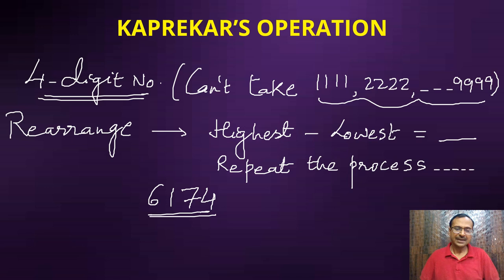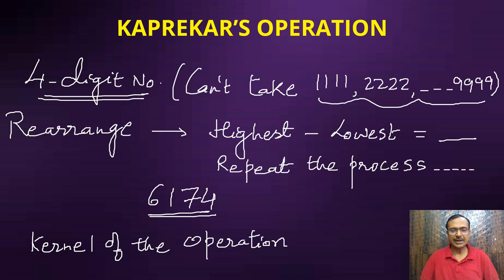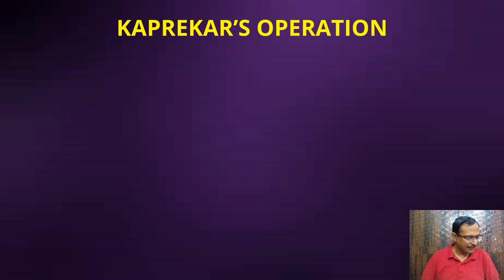The kernel of the operation is this number 6174 - a number which ultimately comes after carrying out a particular number of steps. Let's check whether this is correct or not.